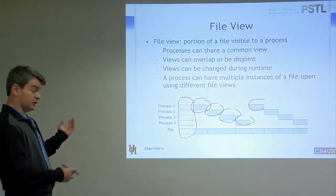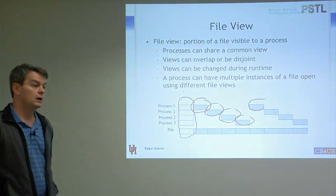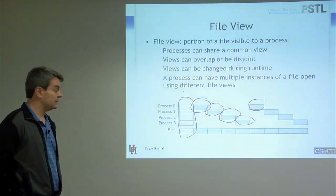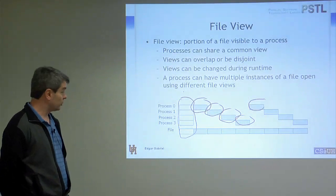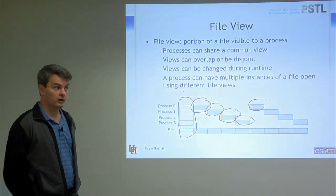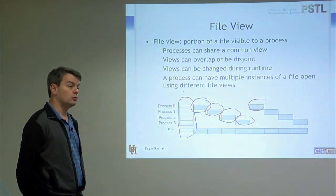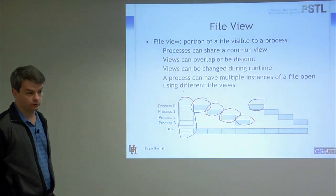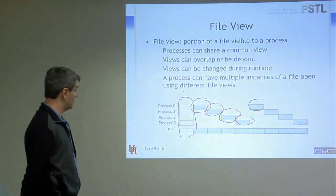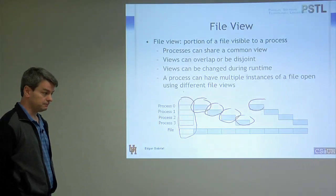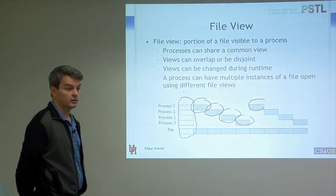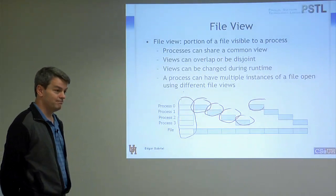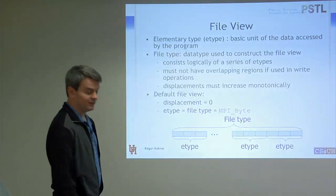What optimizations can you base on a file view? You can pre-calculate where you need to put a particular portion of your data. A couple of those calculations can be done in advance. I show a number of things we did based on file views, such as working on process placement optimizations: if you know who tries to access neighboring regions in a file, you can combine their data more efficiently. For read operations, you could think of prefetching data items based on a file view. In my personal opinion, implementers have not used that feature to the fullest extent yet.